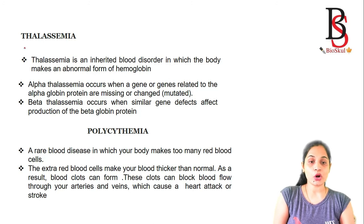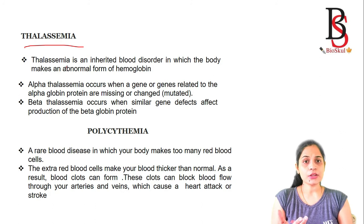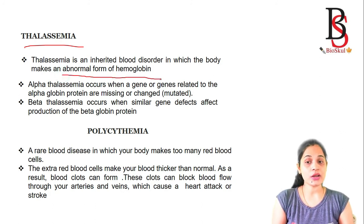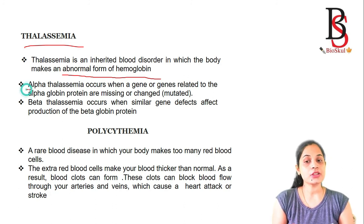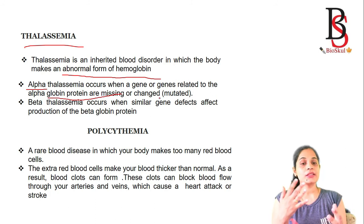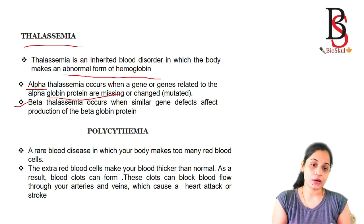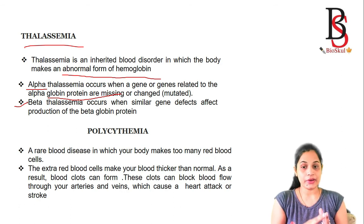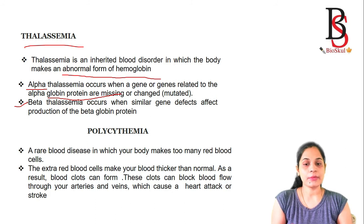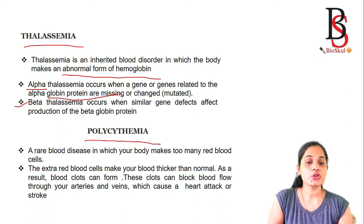Thalassemia is also an inherited blood disorder in which the body makes an abnormal form of hemoglobin. There are two types: alpha thalassemia, which occurs when genes related to alpha globin protein are missing or changed, and beta thalassemia, which occurs when genes related to beta globin chains are mutated or defective.